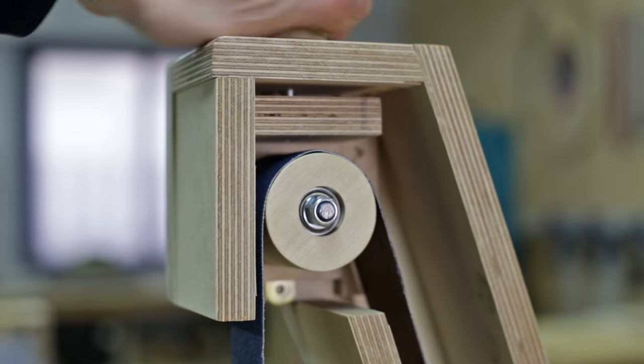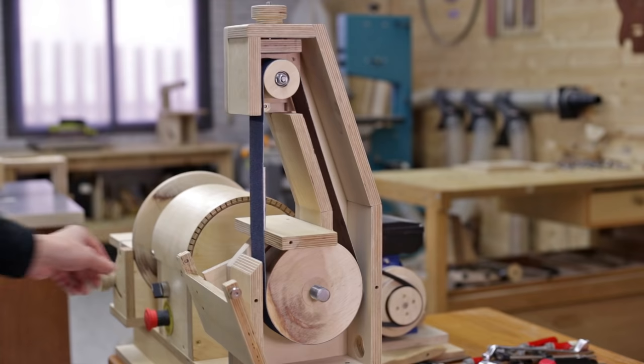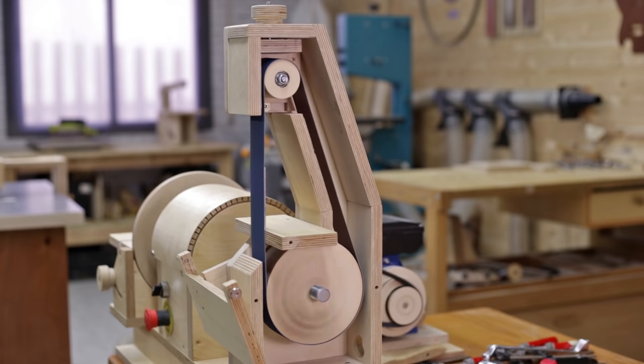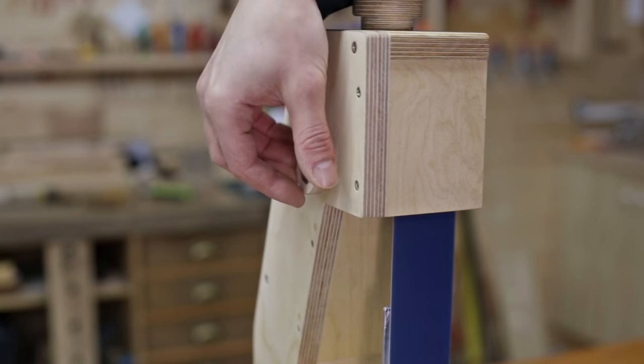I tighten the upper knob a little. We needn't tighten the belt too much. I check if everything turns as it should. With this other knob I can correct the position of the sanding belt.